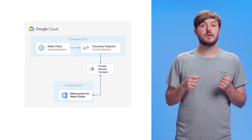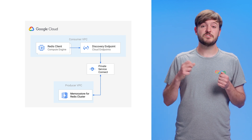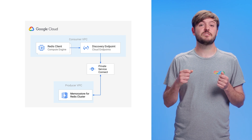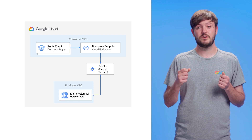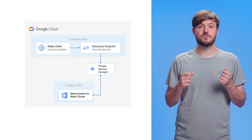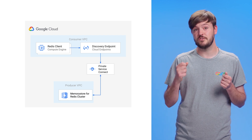Memorystore for Redis Cluster supports connectivity via Google Cloud's Private Service Connect, or PSC. PSC allows consumers to access GCP's managed services privately from inside the consumer's VPC network. Each cluster has what we call a discovery endpoint for connectivity. The discovery endpoint is a designated private IP address which advertises the cluster topology to Redis application clients. This architecture makes provisioning a cluster simple, as users are not required to pre-allocate large blocks of IP addresses to support large horizontal deployments.